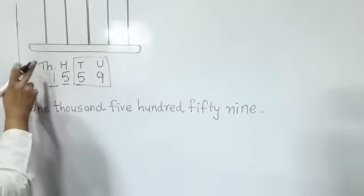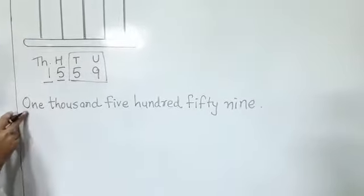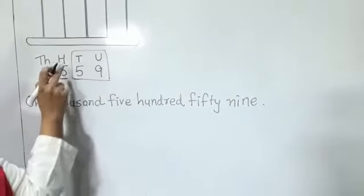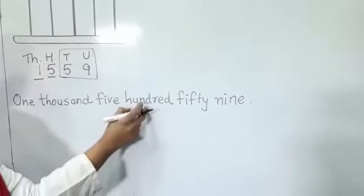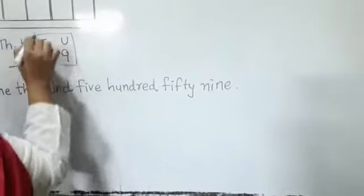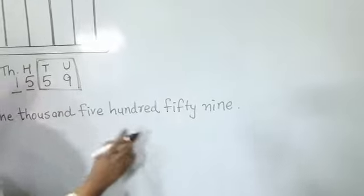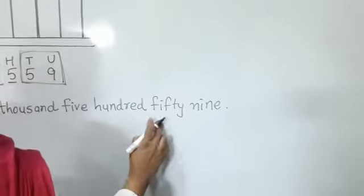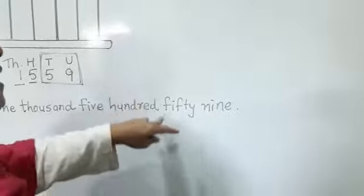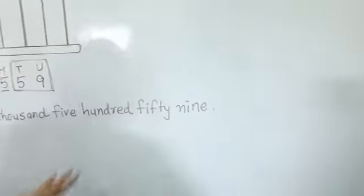See again — the thousand place is 1, so we write one thousand. The hundreds place is 5, so we write five hundred. Then we call the two remaining numbers together: fifty nine. You can write one thousand five hundred and fifty nine.